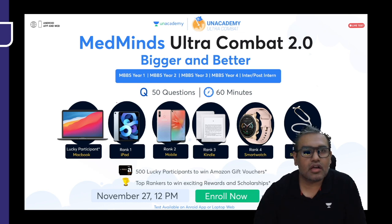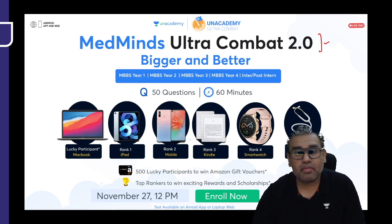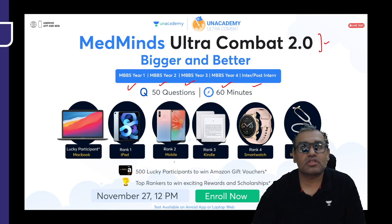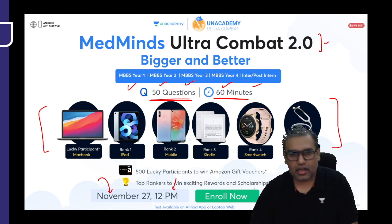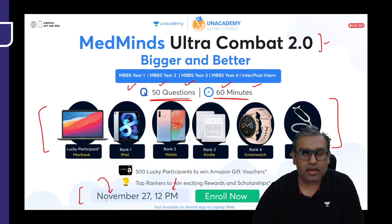The Academy is launching Ultra Combat Part 2, going to be bigger and better now. There are separate questions for MBBS year one, year two, year three, both pre-posed intern or post-intern. It's going to be a one-hour combat having 50 questions with prizes. It's happening on the 27th of November, afternoon at 12 PM. Kindly enroll using the code Dr. Ankit Tan or any other code. Please mark your calendars on 27th November in the afternoon at 12.